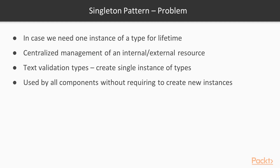Now let's understand the problem. The problem the singleton pattern is designed to address is when we need one and only one instance of a type for the lifetime of our application. The singleton pattern is usually used when we need centralised management of an internal or external resource and a single global point of access. We also use the singleton pattern for our text validation types, because we want to create a single instance of the types that could then be used by all the components of the application, without requiring us to create new instances of the types.